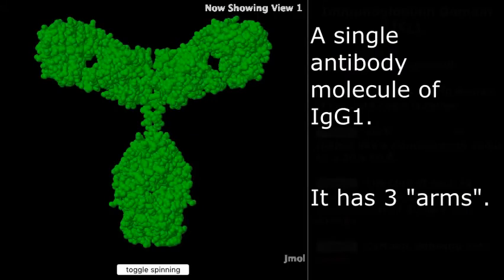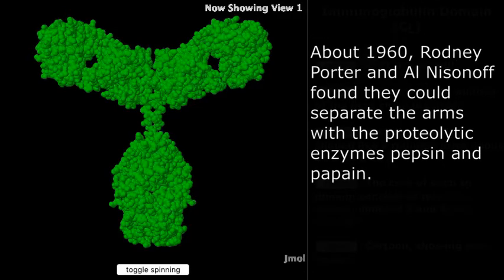Here is a single antibody molecule, IgG1, and you can see that it has three arms. Let's go back to 1960, long before proteins like antibody could be cloned and expressed exactly the way you want. It was around 1960 when Rodney Porter and Al Nissenoff found that they could break the three arms apart using proteolytic enzymes, specifically pepsin and papain.